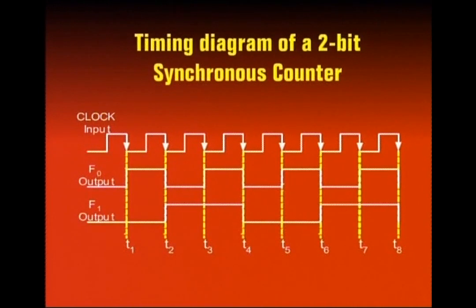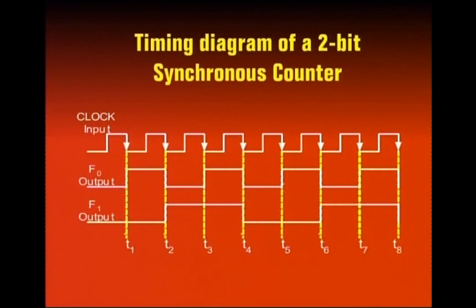We have seen the 2-bit synchronous counter. The first flip-flop has both J and K inputs permanently connected to 1, and the two clocks are connected. The second flip-flop's J and K inputs are connected to the Q output of the first flip-flop.